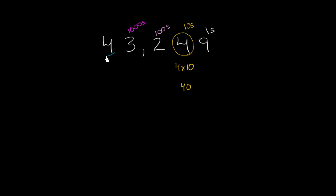And then the 4 on the left is in the 10 thousands place. So it literally represents 4 times 10,000, or 4 tens thousands, or 40,000.